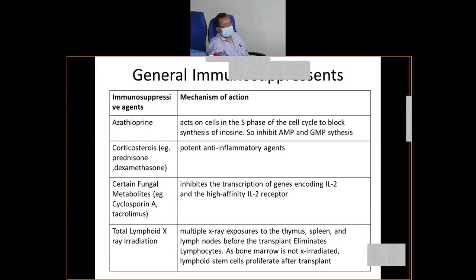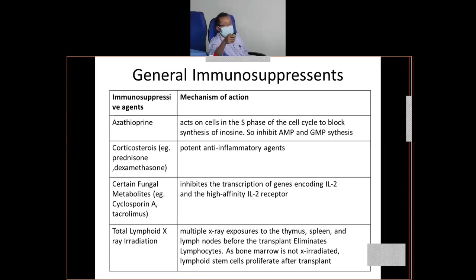Then, X-ray radiation — lymphoid X-ray radiation. These T cells or lymphoid cells are very much sensitive to X-rays. If you give X-ray radiation, the activation of lymphocytes will be less. If you selectively give X-ray radiation — not giving radiation to the stem cells in the hematopoietic stem cells — obviously the hematopoietic stem cells will proliferate and produce hematopoiesis.